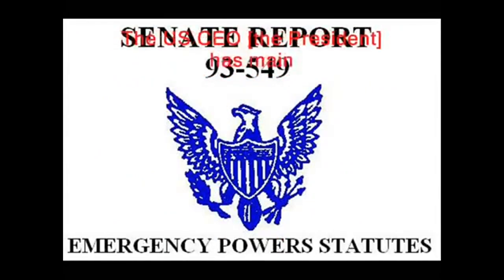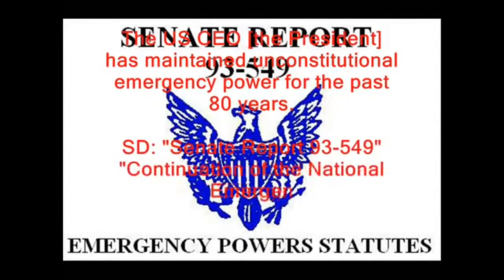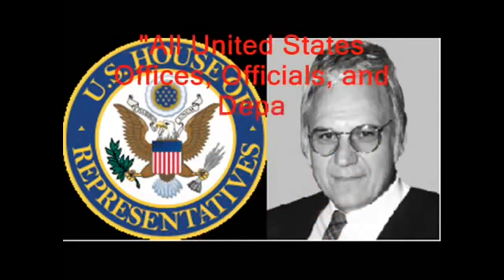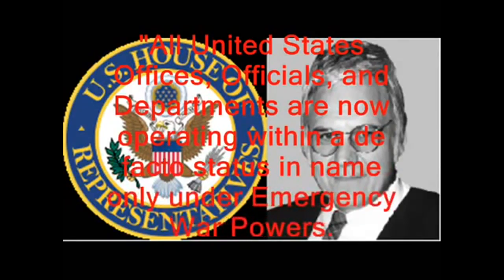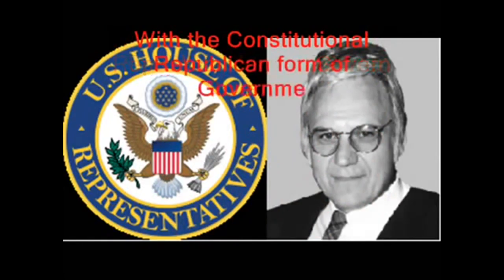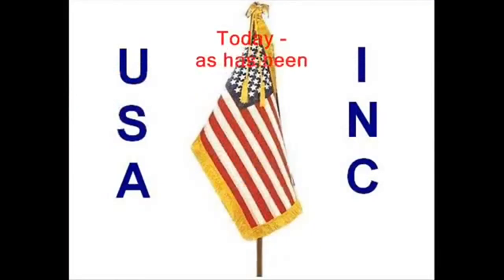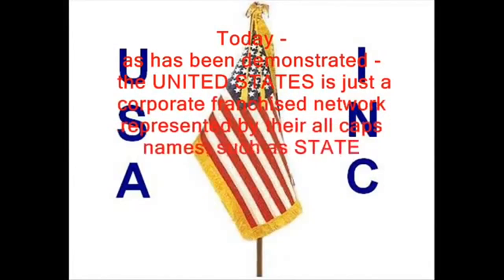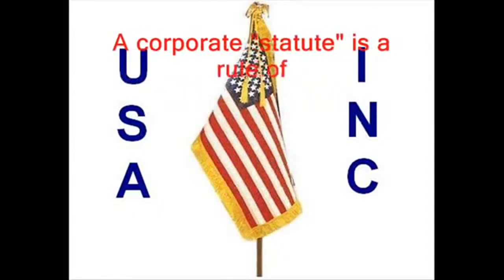The United States is a private corporation with unnamed stockholders. A private corporation is its fiscal agent. A private corporation owns and circulates the currency we are forced to use. A private corporation expects us to pay them taxes. The U.S. President, CEO, has maintained unconstitutional emergency powers for the past 80 years. Source document: Senate Report 93-549 and Continuation of the National Emergency, 2012-2013. Quote: 'All United States offices, officials, and departments are now operating within a de facto status in name only under emergency war powers, with the constitutional Republican form of government now dissolved.' Source document: Representative Trafficant, Congressional Record, March 1993.